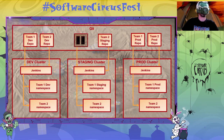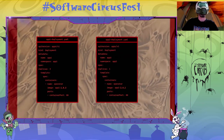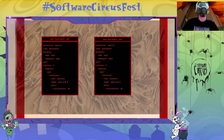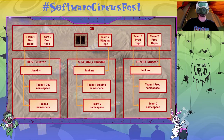Every team in the company — in the space marine forces — has a development, staging, and production namespace. Each namespace has a corresponding GitHub repo holding the YAML files that define the applications running on that namespace. Each cluster has a Jenkins that is syncing all the changes from this repo to the namespace. Inside one of these repos you can see YAML files — we all love YAML files — and we have an app1 deployment YAML describing application one, application two, etc.